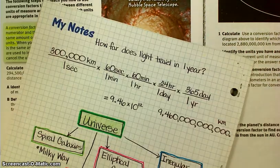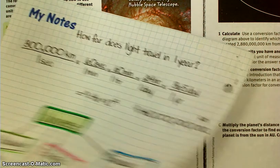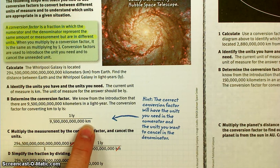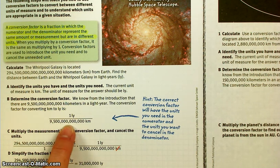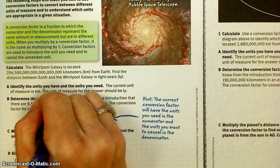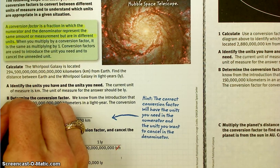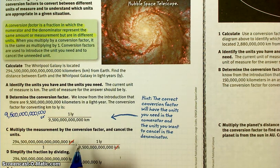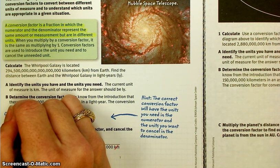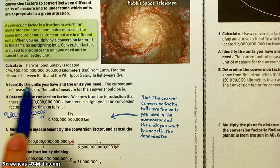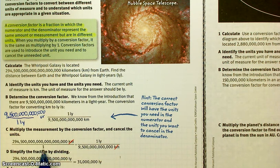And from lesson one, remember we said that light can travel 9.46 times 10 to the 12th kilometers in a year. They rounded that off to 9.5 trillion. So in one light year, there are 9,500,000,000,000 kilometers. So this is a fraction that, even though it's disguised, it's equivalent to one because one light year is the same distance as 9,500,000,000,000 kilometers. So they took what they had, this whole big long number, and they placed it over a one just to make it look like a fraction.